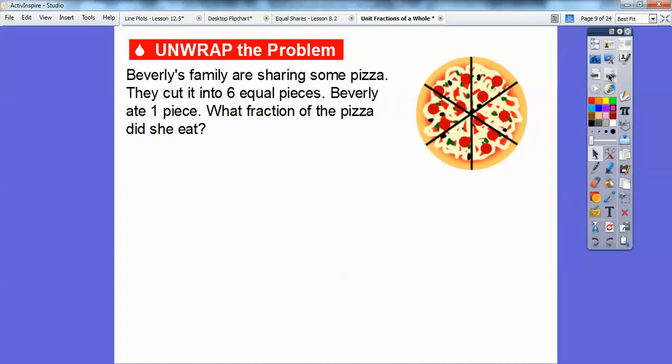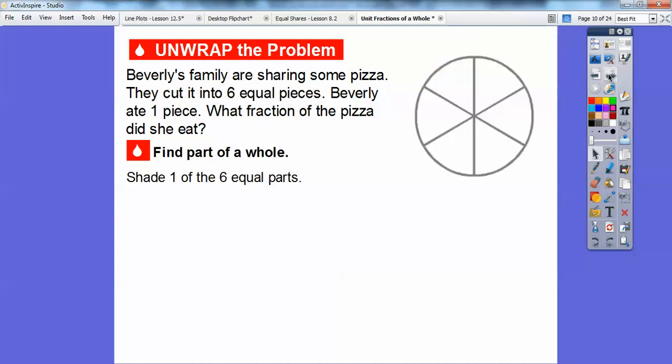Beverly's family are sharing some pizza, and they cut it into 6 equal pieces. Beverly ate 1 piece. So, what fraction of the piece did she eat? What we're going to do is find a part of the whole. I've created a circle, cut into 6 equal pieces here, and we're going to shade one of the 6 pieces. I'm going to shade this piece right here.